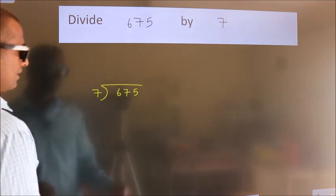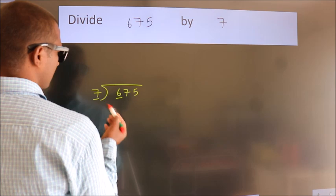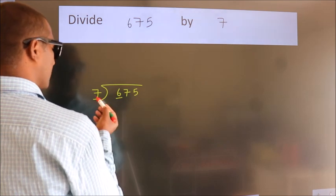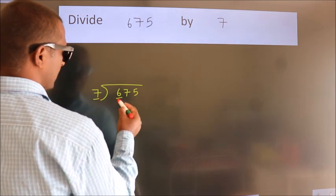Here we have 6. Here 7. 6 is smaller than 7, so we should take two numbers: 67.